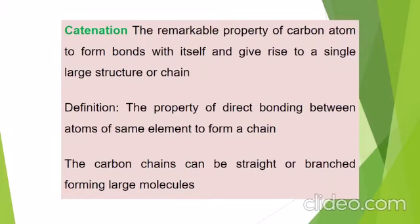As shown earlier, there may be a straight chain between carbon atoms, or any carbon can be substituted further to form a branched chain. This is the versatile nature of carbon. The unique property of self-linking of carbon atoms through covalent bonds to form single straight or branched chains or rings of different sizes is catenation. From this discussion we can conclude that the maximum tendency of carbon for catenation is responsible for the existence of a large number of carbon compounds.